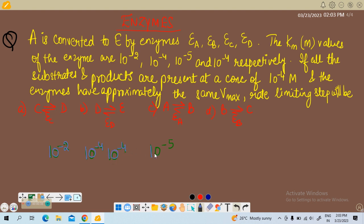So here Km values are given to us. If all the substituted products are present at a concentration of 10 raised to power minus 4 molar and the enzymes have approximately the same Vmax, rate limiting step will be...